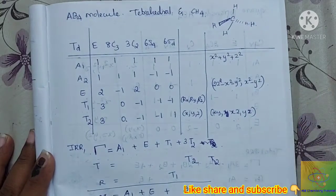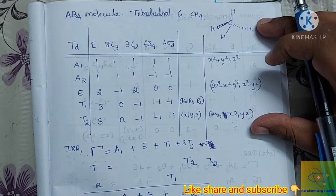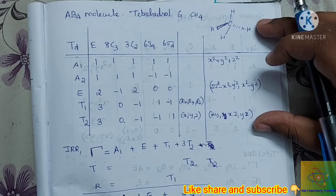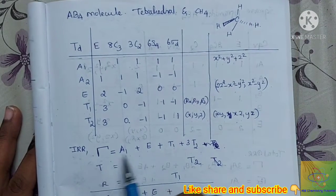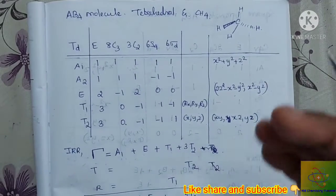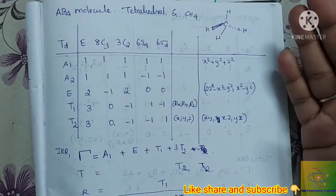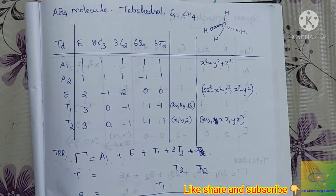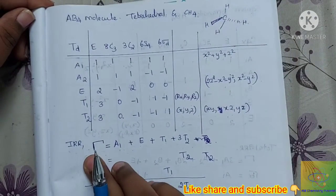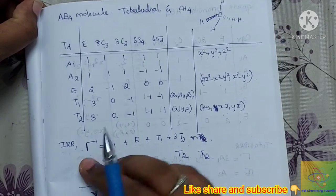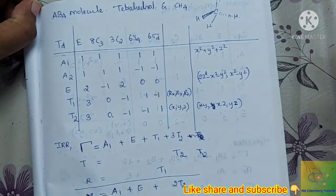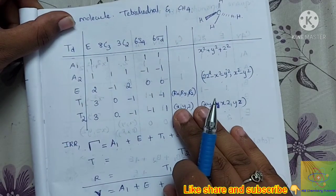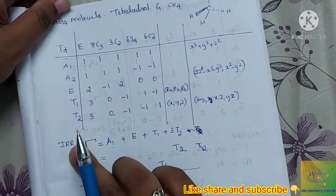In the character table we use four steps. We calculate the total number of modes of motion, then find the irreducible representations. The total modes of motion are separated into translational, rotational, and vibrational modes. We then use the vibrational modes and identify IR and Raman active modes. This is the same approach used in previous videos for C2v point group, water molecule, POCl3, and N2F4 — refer to the group theory playlist for those.